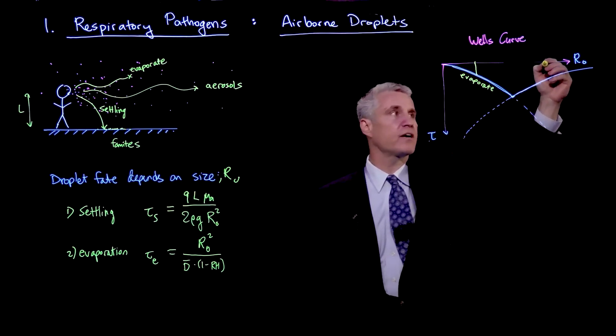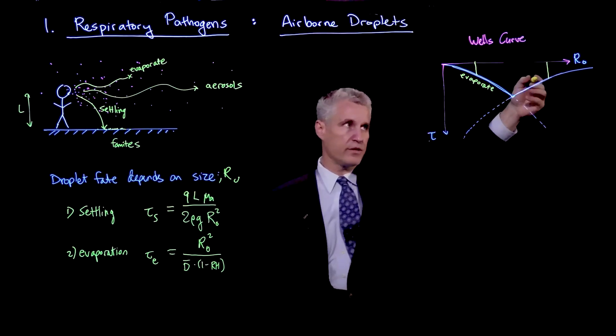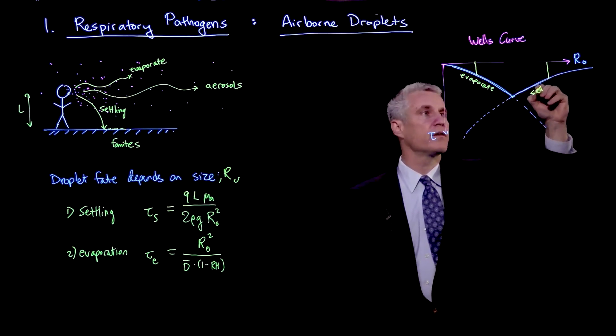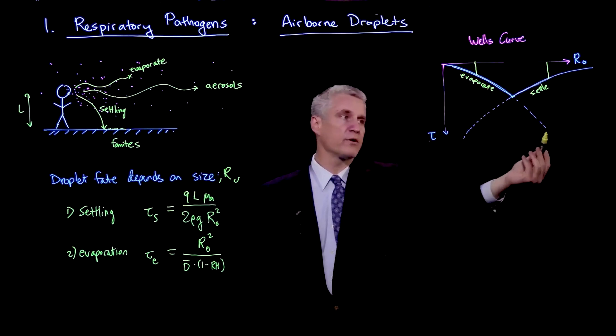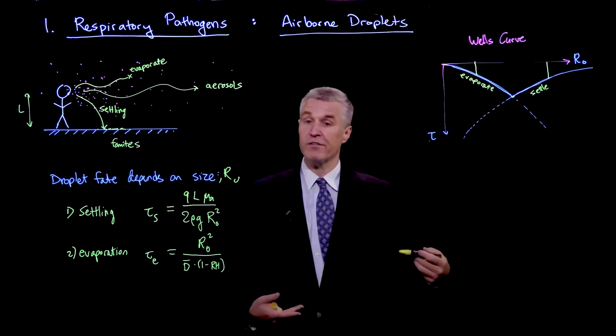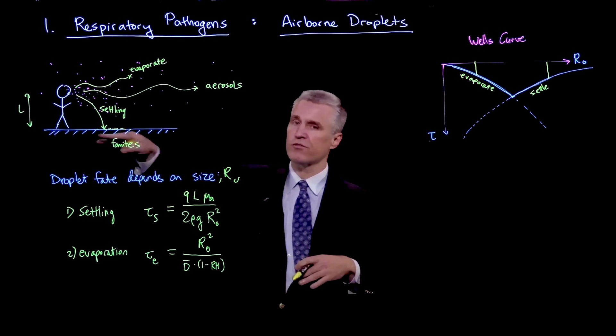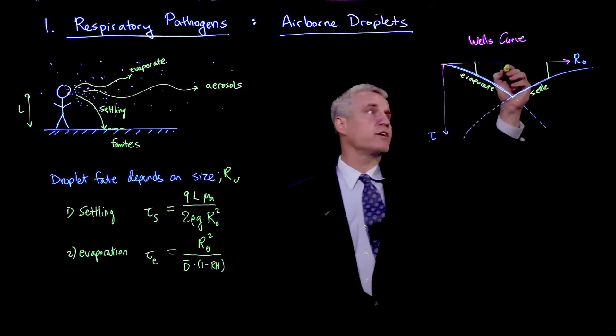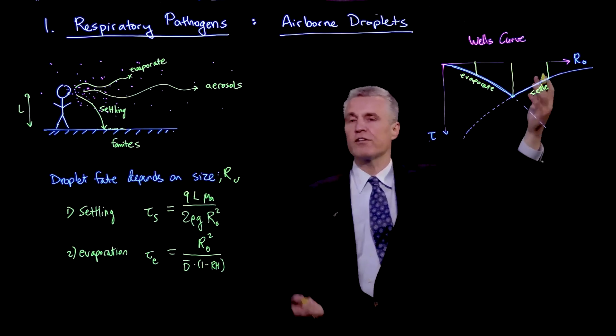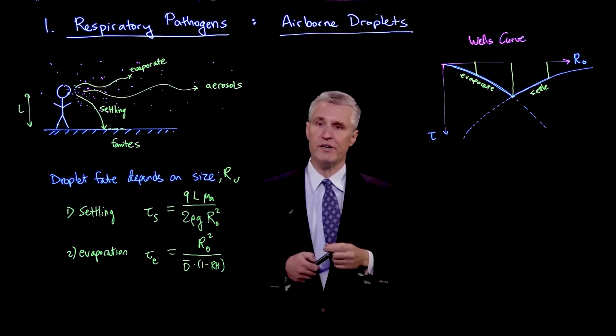On the other hand, if I have a larger droplet that's going to hit this other curve first, then these droplets will settle. Because before they have time to evaporate, which would require all the way going to here, they've already fallen to the ground. They may continue evaporating on the ground and you're eventually left with kind of a dried up residue of some of the material that may have been contained in the droplet. And then there's a crossover.